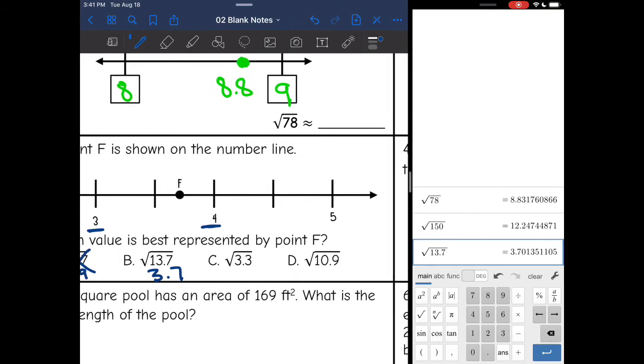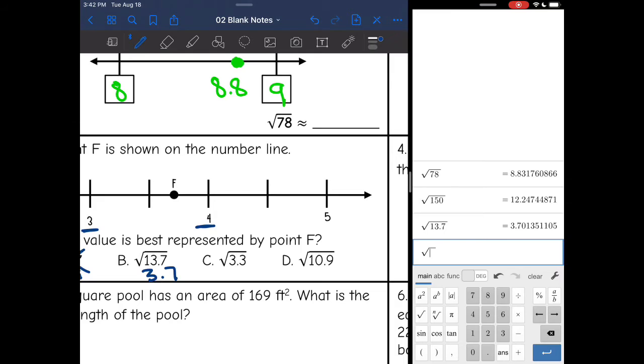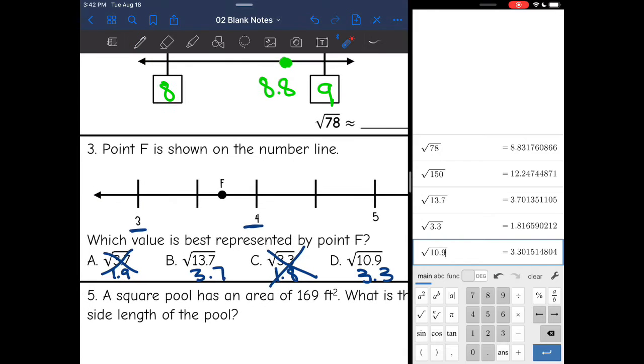Let's check the other ones. C is square root of 3.3. I get 1.8. No, that's not between 3 and 4. And then D is square root of 10.9. That is 3.3. So I'm kind of between 3.7 and 3.3. Well, F is closer to 4, and 3.7 is closer to 4, so that must be my answer.